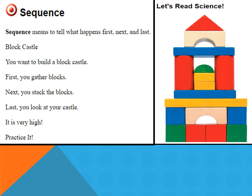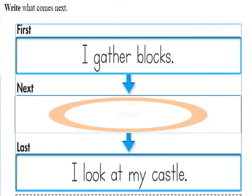Let's read: Science Sequence. Sequence means to tell what happens first, next, and last. Block castle — you want to build a block castle. First, you gather the blocks. Next, you stack the blocks. Last, you look at your castle — it's very high! Let's practice. Let's write what comes next. First, you gather blocks. The last thing was you were looking at your castle.